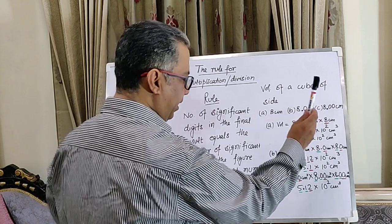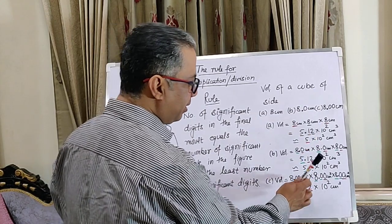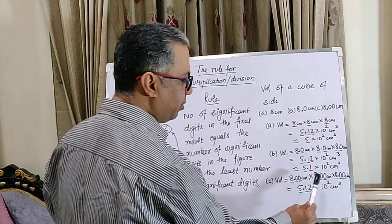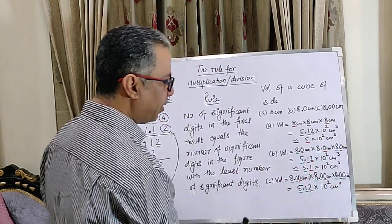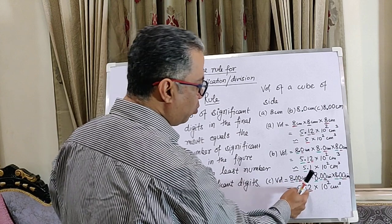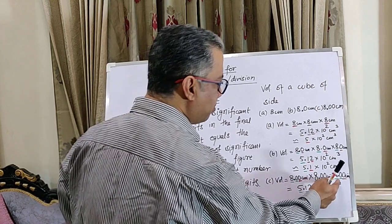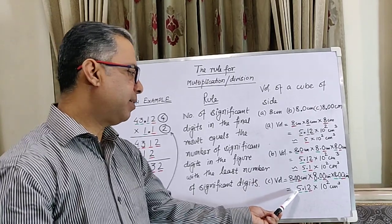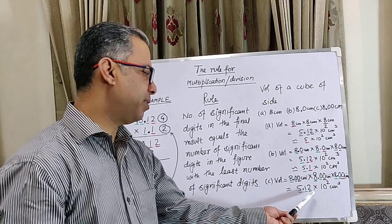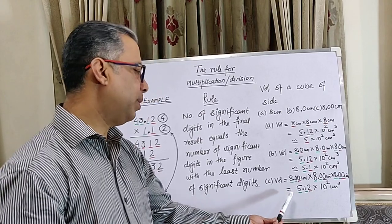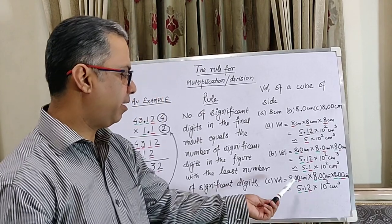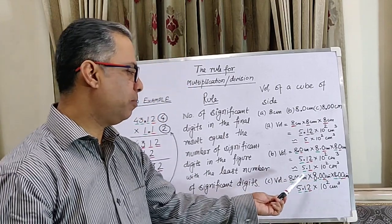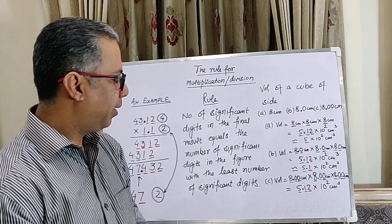In the final case, where we multiply 8.00 × 8.00 × 8.00, we end up with 5.12 × 10² cm³. Here, the final result has only one uncertain digit and also it has exactly three significant digits, which corresponds with the input figure.